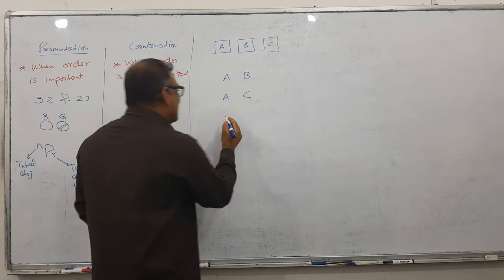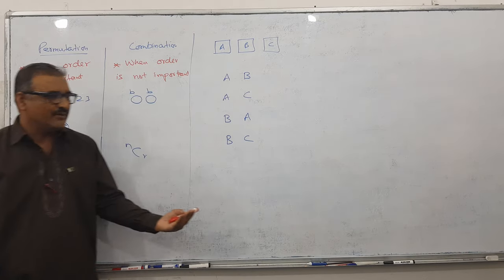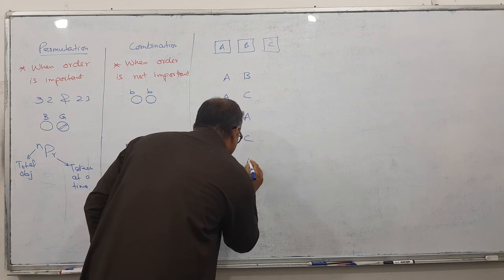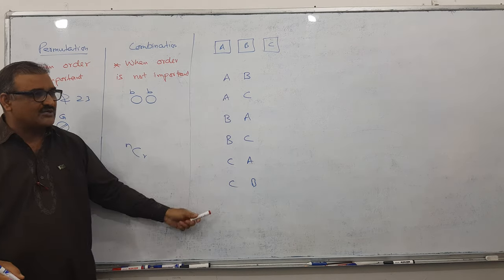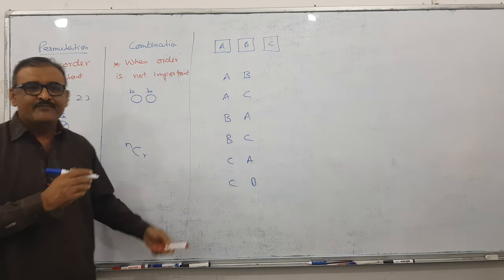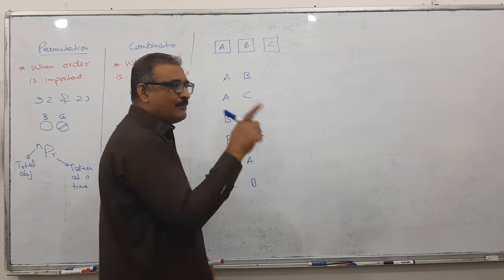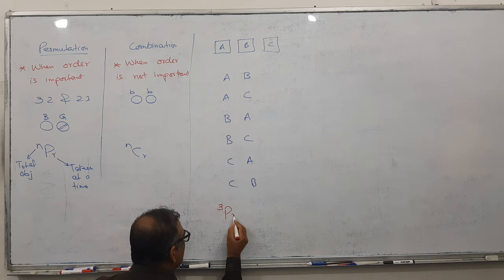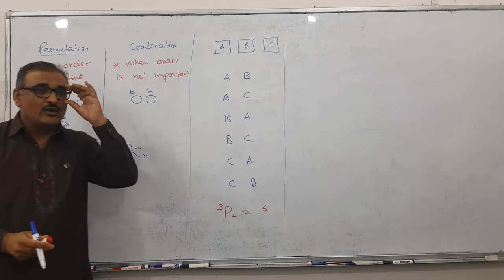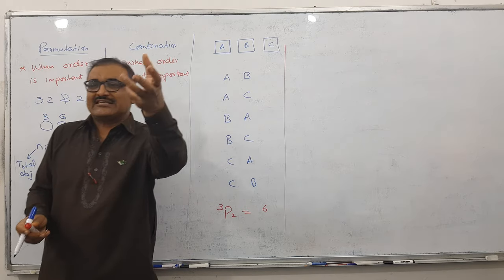We also have B and C, C and A, C and B. These are six possible options. Using the shortcut: how many total pictures? Three. How many taken at a time? Two. Is order important? Yes. So the answer is 3P2, which gives 100% six. And we got six options - you cannot give any other option in this kind of question.